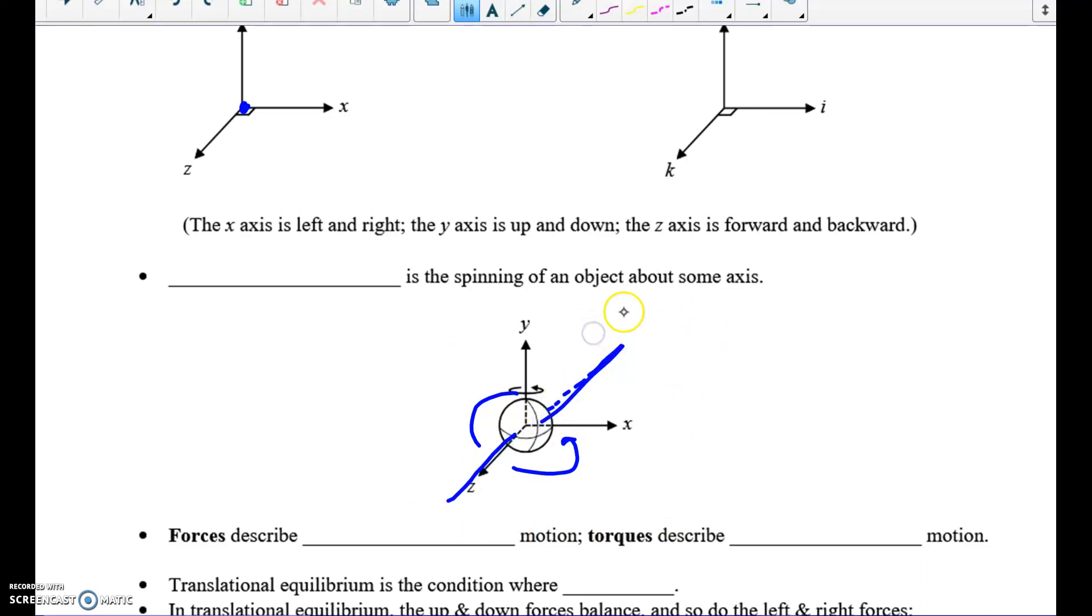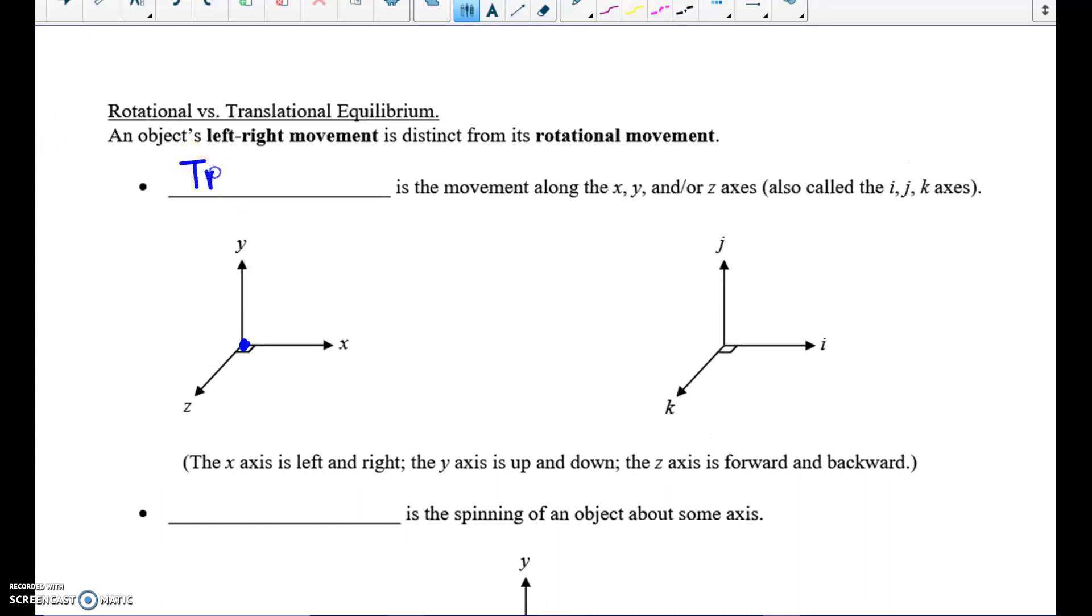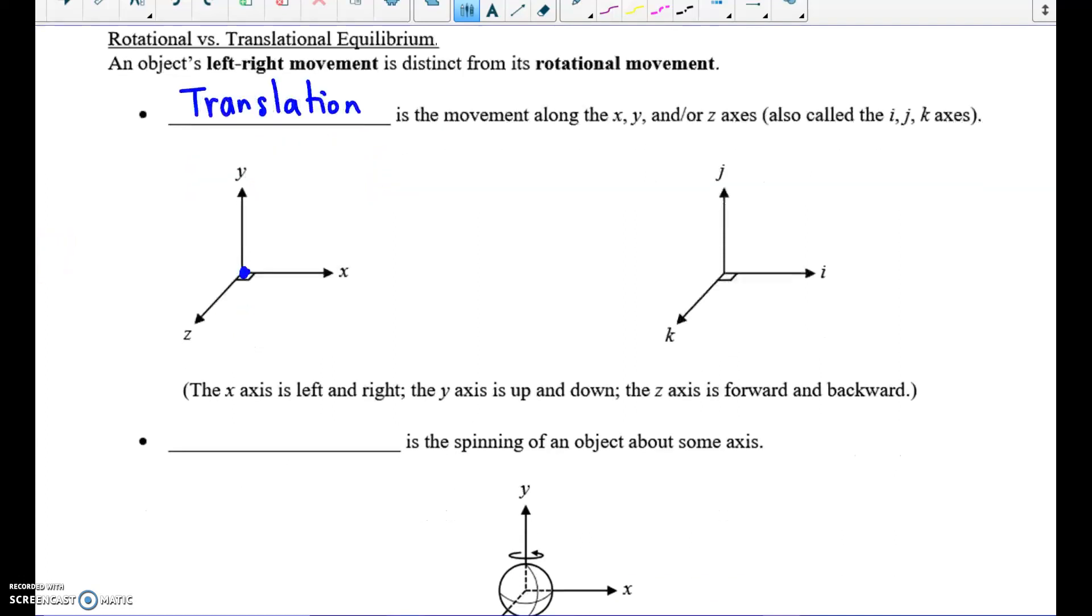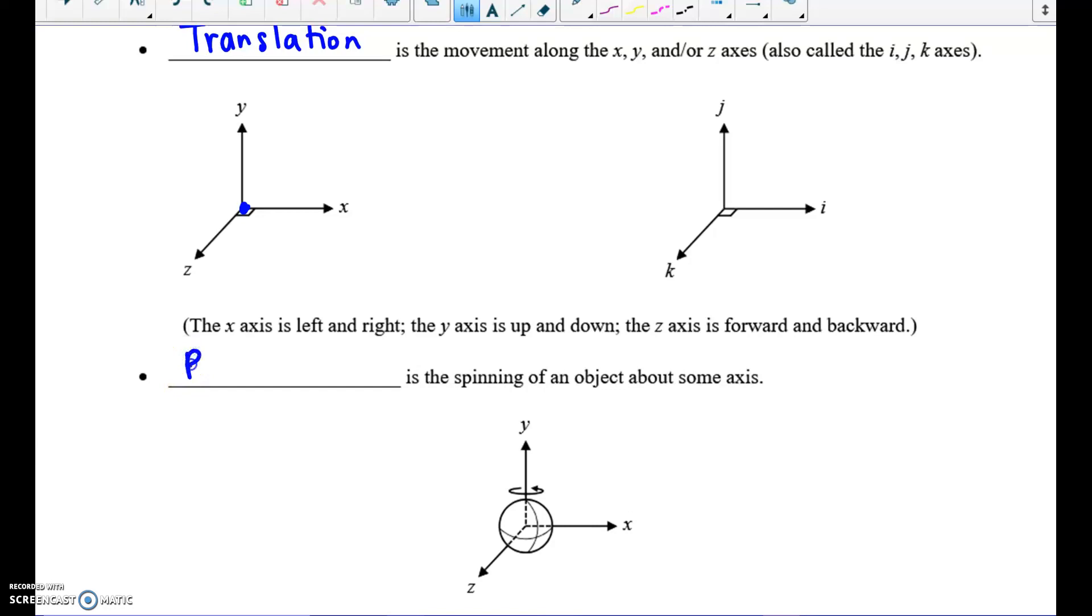The two different types of motion are called translation and rotation. Translation is the first one, translation or translational movement. And then the other is rotation, the spinning about some axis.